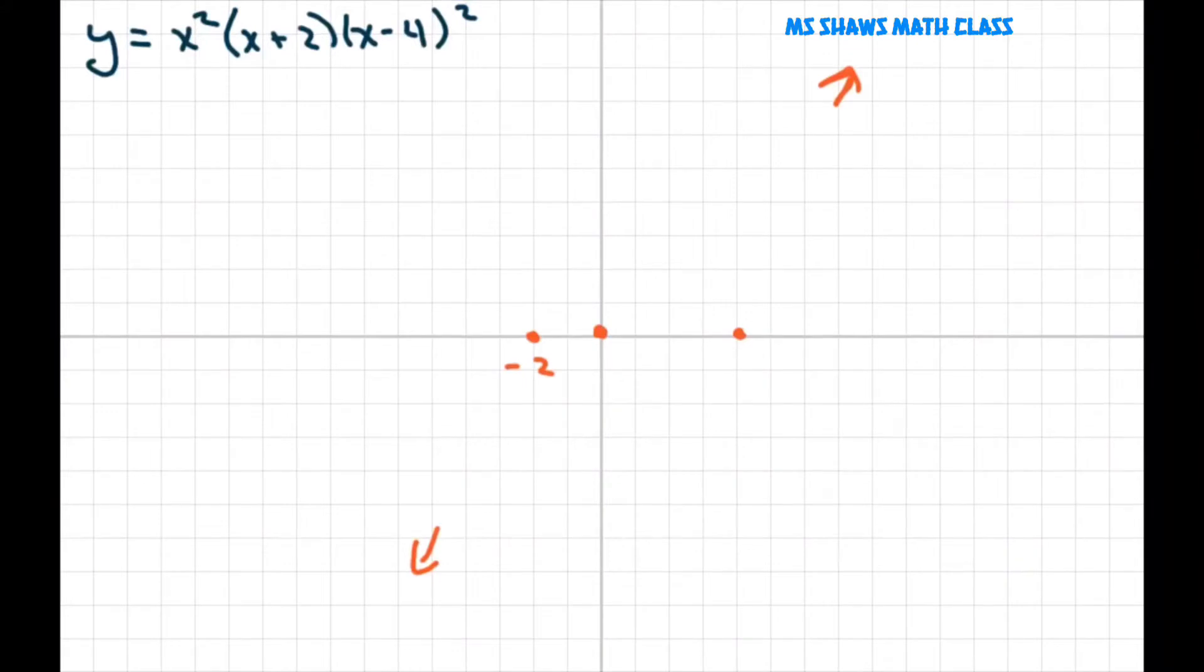So let's go to negative 2. Now negative 2, the multiplicity is 1. That means I cross. And I'm not going to worry about, you can plug this in. If I plug in 1, this will probably go up pretty high here. But we're not worrying about on this video the min and max. So I'm just going to come back down to 0.